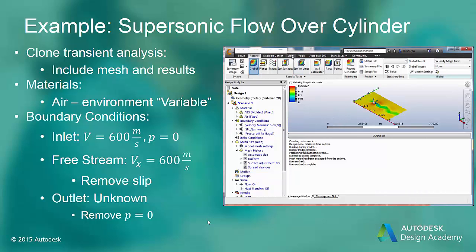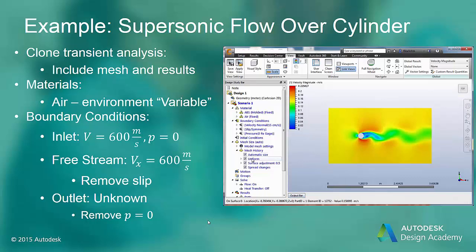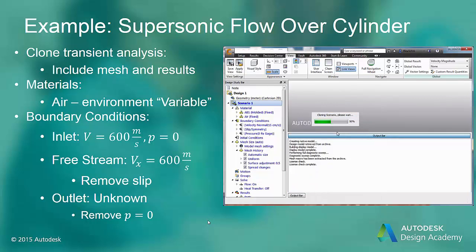You can see that we left results. So let's set up the review, set up the view that we want to set up our compressible flow analysis. First, we're going to clone this transient analysis and give it a name that indicates supersonic flow. And we want to include the mesh and results since the mesh for the transient analysis should be fine enough for the compressible flow analysis.